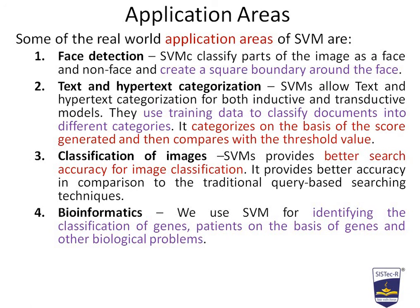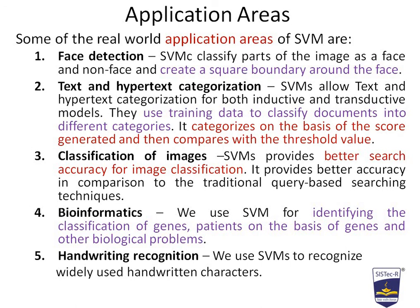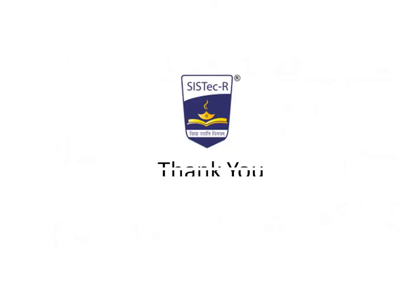The fifth application is handwriting recognition — we use SVM to recognize widely used handwritten characters. You can see that across these five domains there is great variety, and on the basis of patterns we train the system, predict, and recognize things. This is how SVM — Support Vector Machine — works. Thank you for joining.